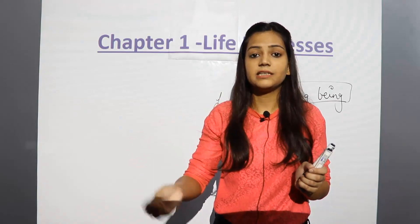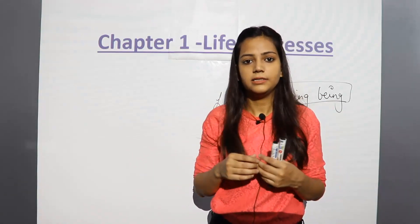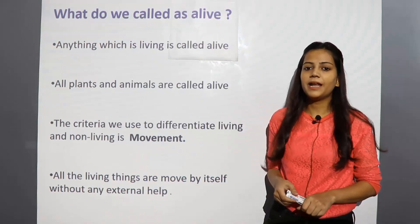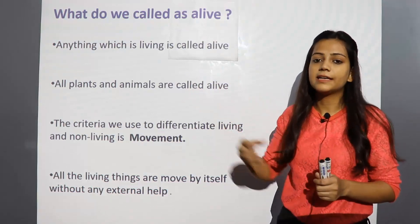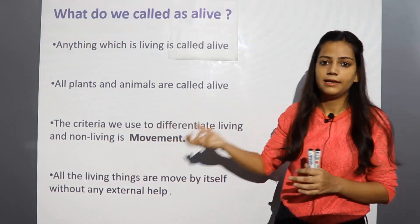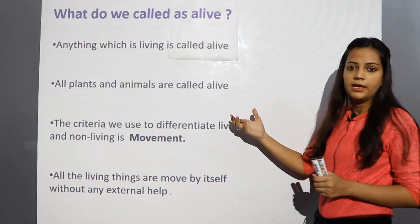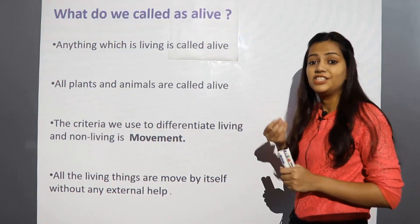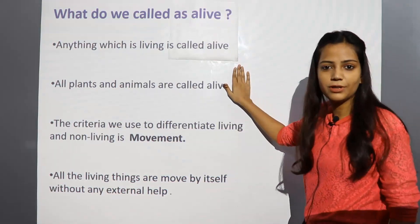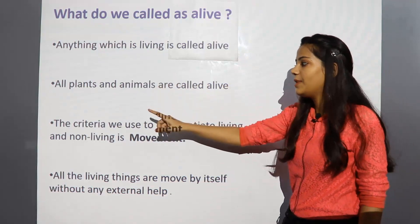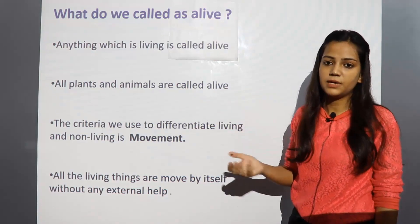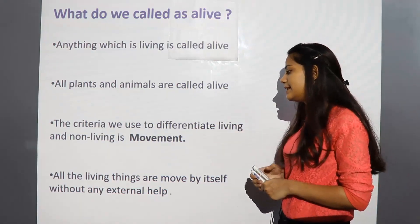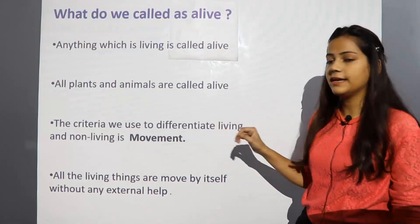So our first heading is: what do we call as alive, and what do we put in the category of dead? Anything which is living — which is alive, जीवित — we call it alive. Now, all plants and animals are called alive. All the plants and animals you see around you — they are all alive. The criteria we use to differentiate living and non-living is movement, as I explained.